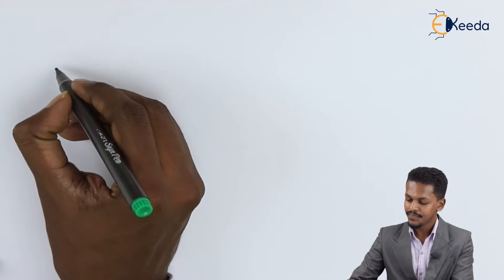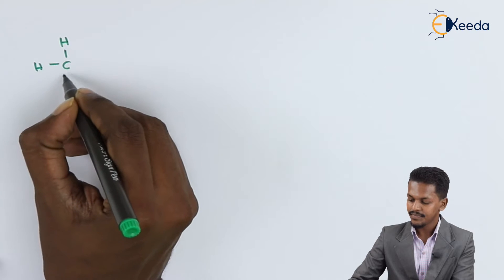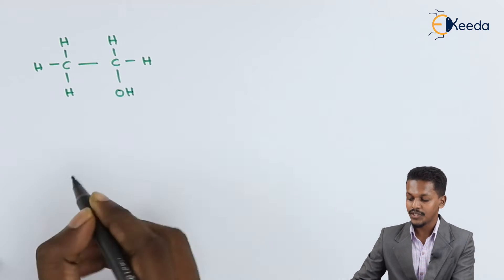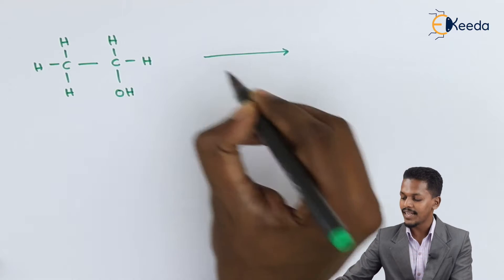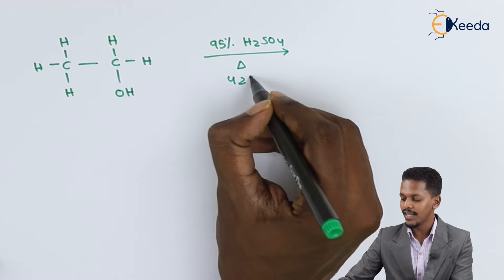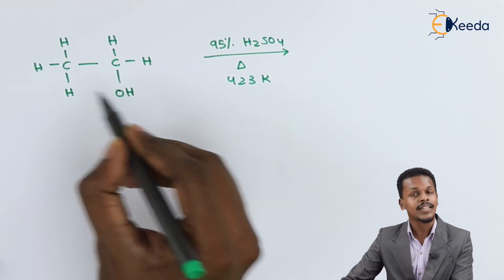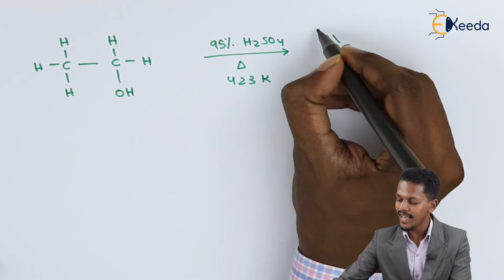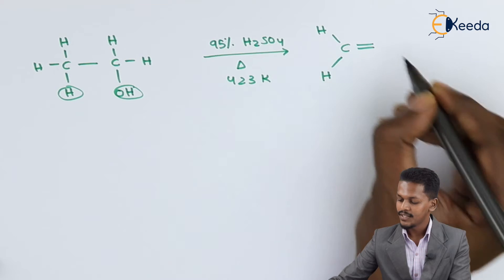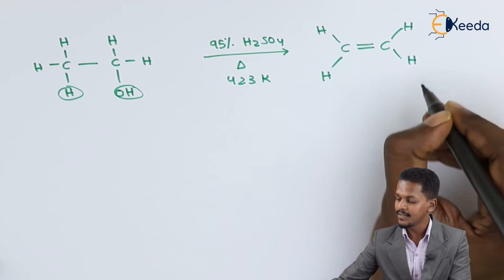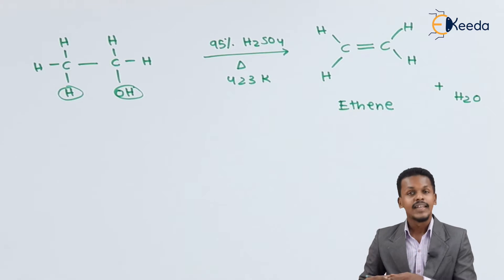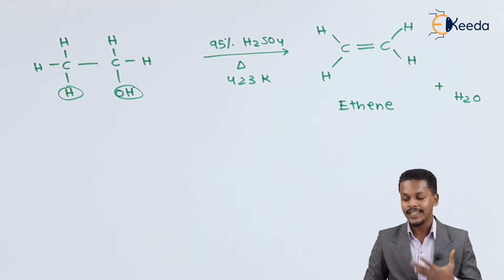Let me consider the primary alcohol CH3CH2OH, which is nothing but ethanol. If we react it with 95% concentrated H2SO4 at a higher temperature of 423 Kelvin, the water molecule will be removed through the dehydration process. We obtain CH2=CH2 after removal of H and OH — that is ethene, which is an alkene.